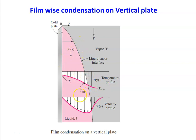The liquid moves downward, and looking at the velocity profile, the velocity increases and reaches a maximum, then decreases. For the temperature profile, the surface temperature is lower, the vapor temperature is higher, and when the vapor temperature reduces to the saturation temperature, it is immediately converted into liquid, and the liquid droplets move downward. This is what the film condensation on a vertical plate looks like.